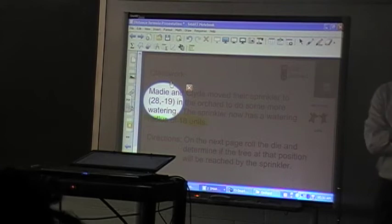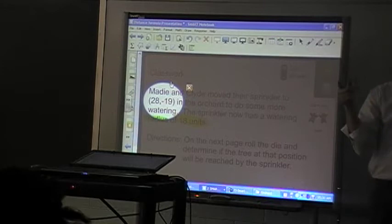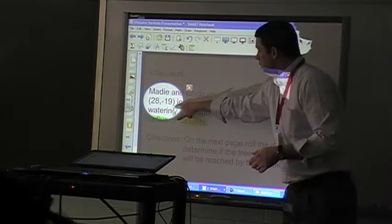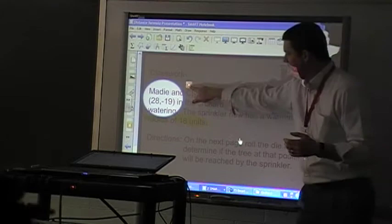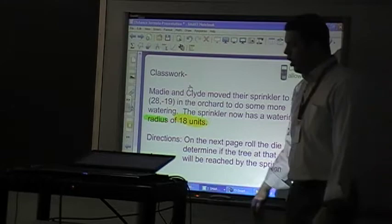And what does that coordinate represent if we're talking about Zaire? The midpoint. Not the midpoint, well the midpoint of the diameter, but that's going to represent the what? The center, okay. So, a couple things that don't matter. Maddie and Clyde definitely does not matter, right. Sprinklers are (28, -19). Please write that down on your paper that that's going to be the center.